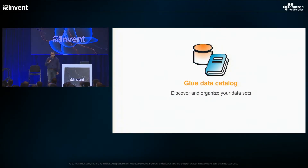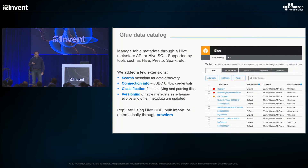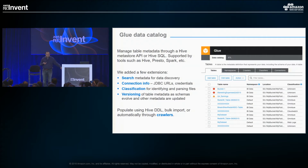Let's talk about the catalog. What the catalog does is it's a system that lets you discover and organize your data sources across your various silos and across S3 or other repositories that have semi-structured data. The basics of the catalog are simple — it's a Hive metastore, or compatible with Hive metastore APIs or Hive SQL, meaning you can access tools like Hive, Presto, Spark, and a variety of ecosystem tools compatible with the Hive metastore.